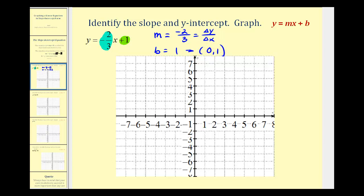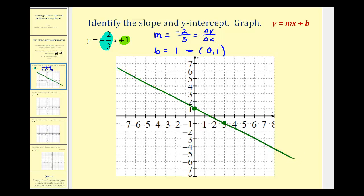We'll start by plotting the y-intercept, which is positive one. Then, because the slope is negative two-thirds, we'll go down two units and right three units. We went down two units because the numerator was negative two, and right three units because the denominator is positive three. Now our line passes through these two points and will look something like this. As you can see, if a line is in slope-intercept form, graphing the line is very straightforward.